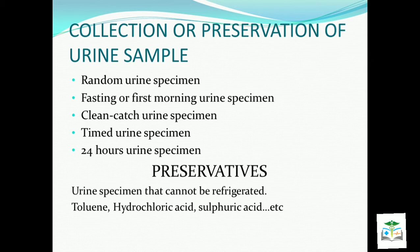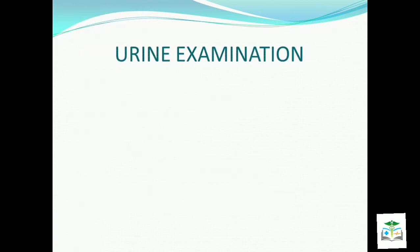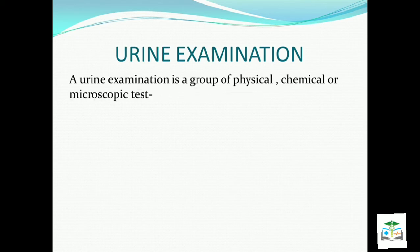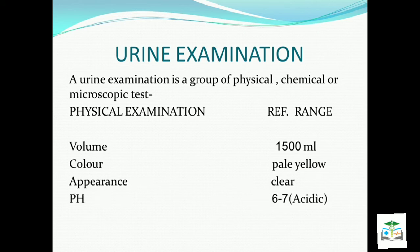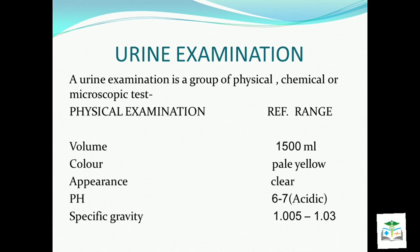Now, methods of urine examination. A urine examination is a group of physical, chemical, and microscopic tests. Physical examination detects five parameters: volume, color, appearance, pH, and specific gravity. Normal urine volume is 1500 ml, color is pale yellow, appearance is clear, and pH is acidic.